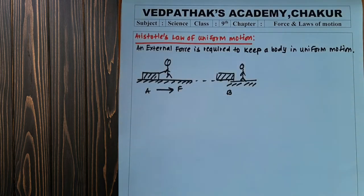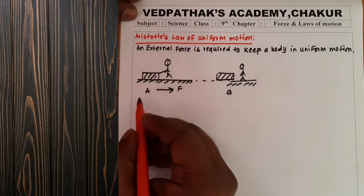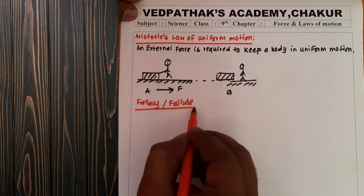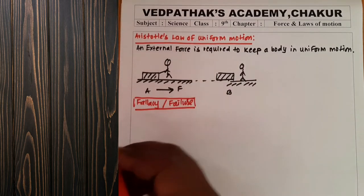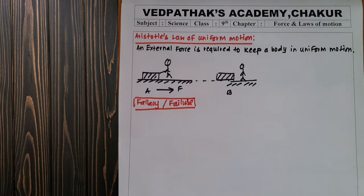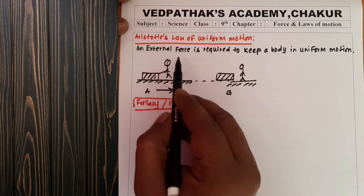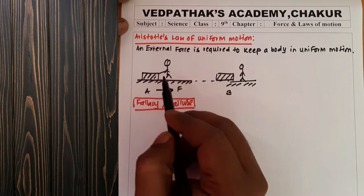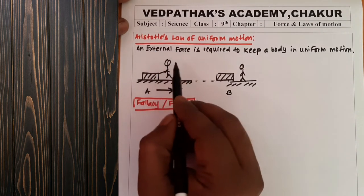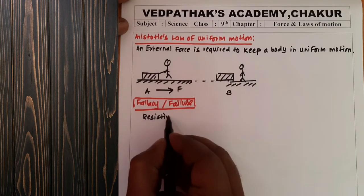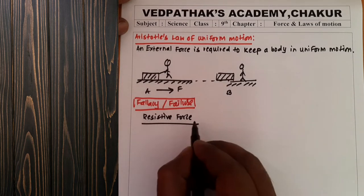But dear friends, there is a failure — a fallacy — in this law of Aristotle. External force is responsible to take the luggage from A to B, but only external force has not caused the motion. What is also present? A resistive force.